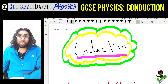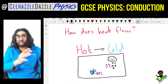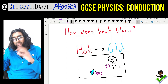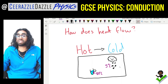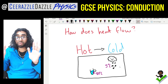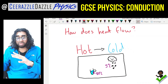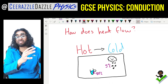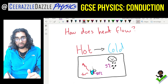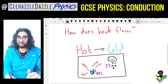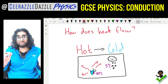Before we start, let's have a quick recap on how heat is transferred. Heat always flows from hot to cold. Here we have a cup of tea at 80 degrees Celsius placed in an environment of five degrees Celsius. The heat will flow from the tea outwards to the surroundings until eventually the tea reaches five degrees Celsius.